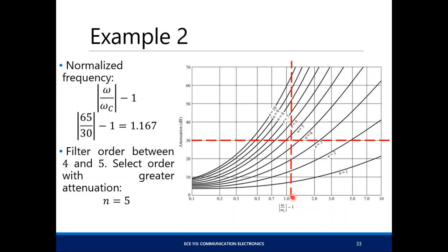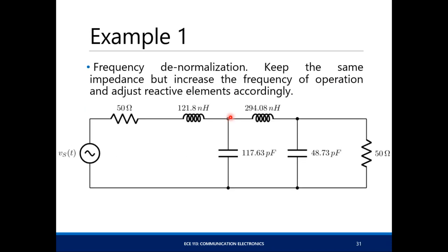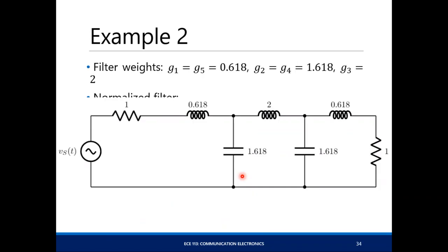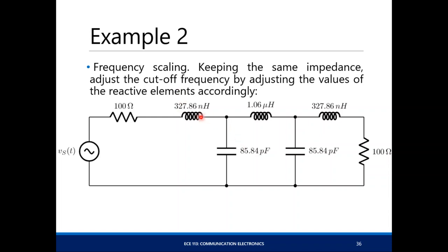So we choose n equals 5. This is the normalized low-pass filter prototype from the table at n equals 5. Scale that in impedance by multiplying 100 to all impedances: inductances multiplied by 100, capacitances divided by 100. Then scale in frequency by dividing all elements by the angular cutoff frequency.